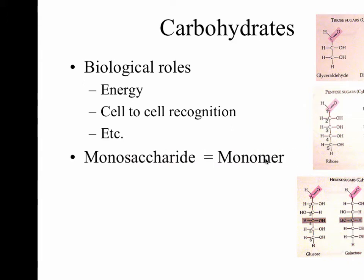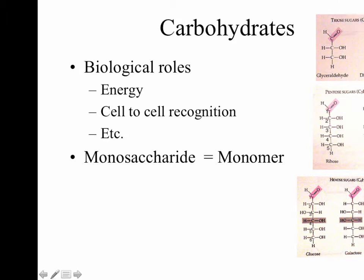Let's start with the monomer. All biomolecules are going to be made up of monomers strung together to be polymers. The monomer of the carbohydrate is the monosaccharide. Some examples of monosaccharides would be glucose, galactose, fructose, and ribose. You can string them together to get more complex carbohydrates.